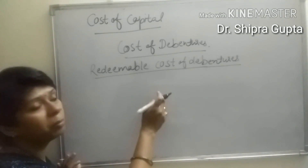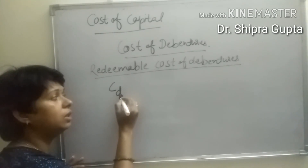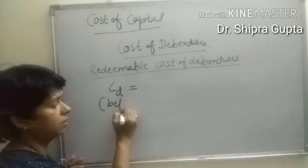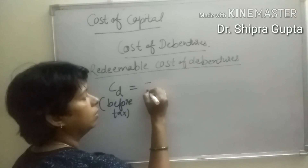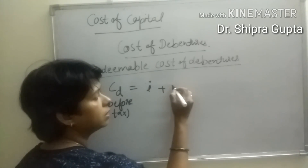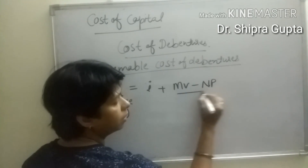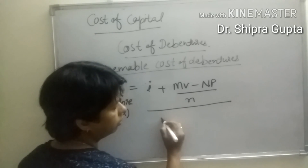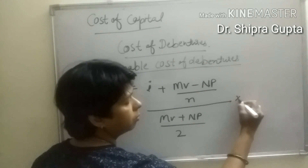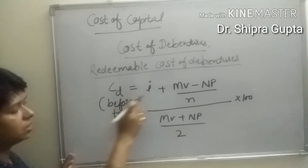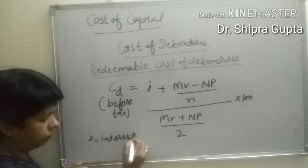Now we will calculate redeemable cost of debentures. The formula is: CD before tax equals I plus MV minus NP upon m, upon NV plus NP upon 2. Here, I stands for interest.